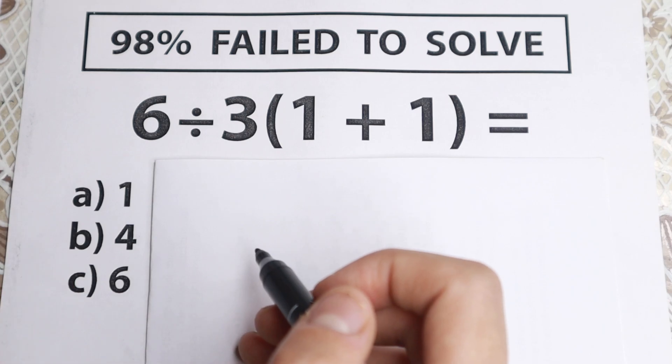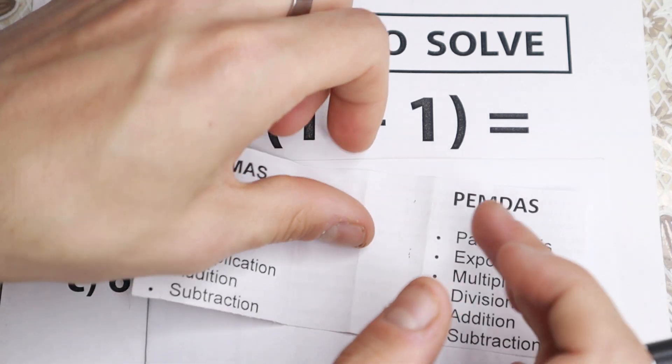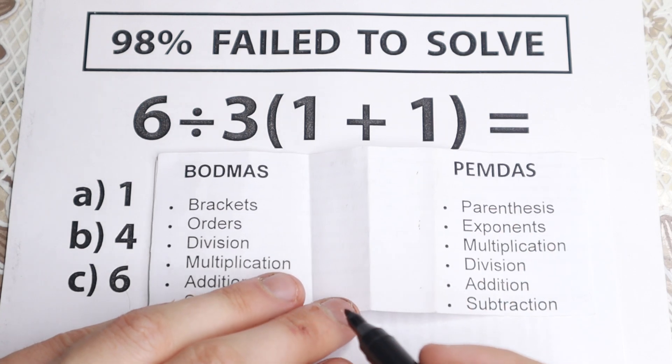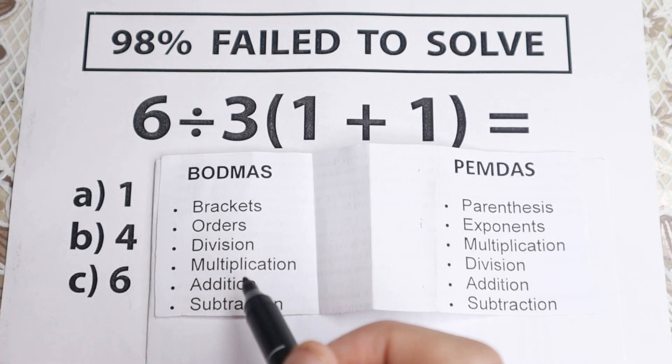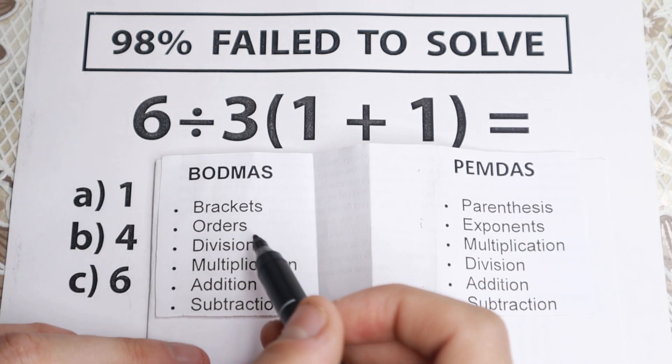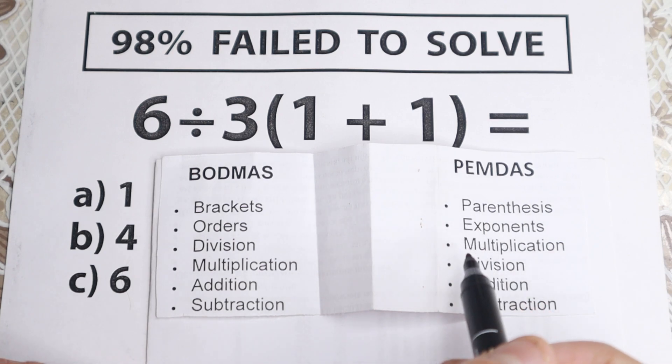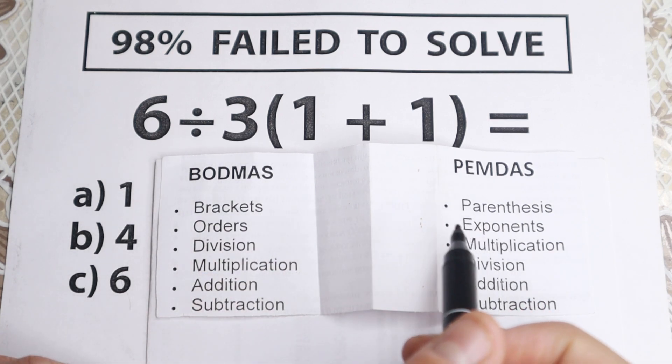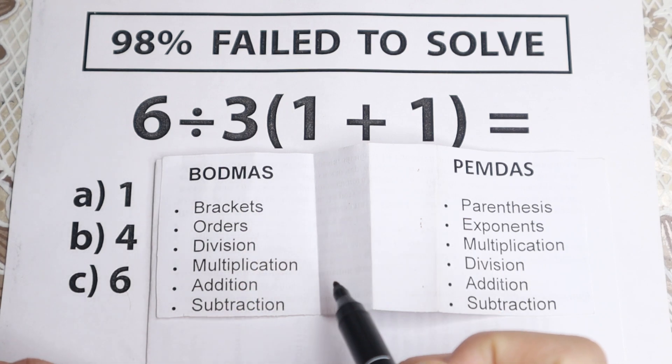But before solving this I want to show you these interesting notes right here. We have two main popular orders of operations: BODMAS and PEMDAS. Maybe PEMDAS is more popular nowadays because BODMAS is the old one, but let's look at these two different orders.